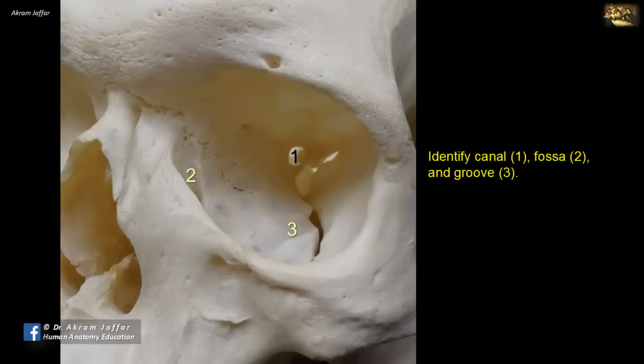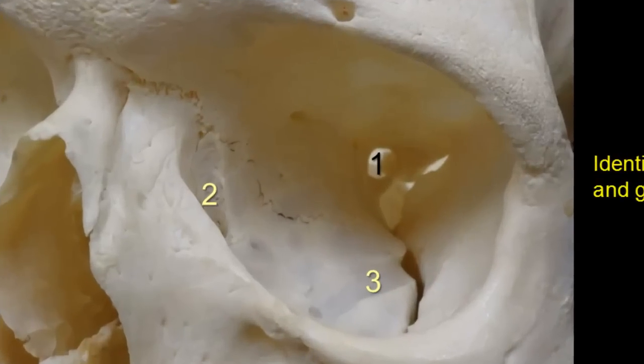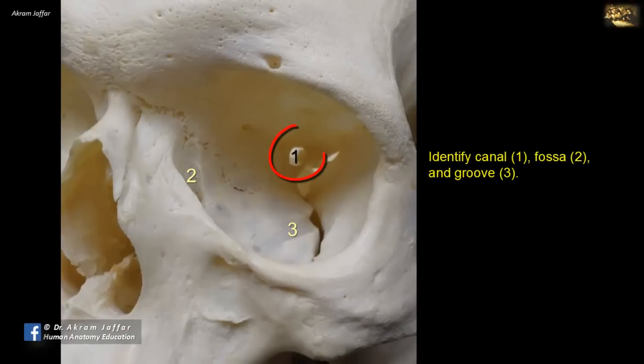Here we are required to identify canal 1, fossa 2, and groove 3. This is a view of the orbits showing the anterior aspect of the orbit and the depth of the orbit. Note that the orbit is a pyramidal-shaped space, and at the apex of this pyramid is canal 1 — the optic canal.